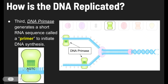DNA primase comes along and lays down RNA nucleotides that complement the bases in the DNA. So A pairs with U, G pairs with C, T pairs with A, and C pairs with G. The resulting sequence — U, C, A, G — would be the RNA primer.